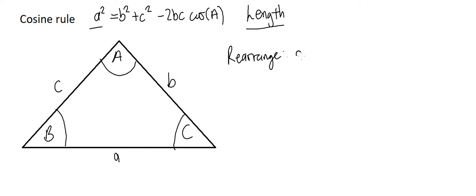So a² equals b² plus c² minus 2bc cos(A). Now I want the angle to be the subject. I need to rearrange this. The first thing I'm going to do is I'm going to subtract b² and c².